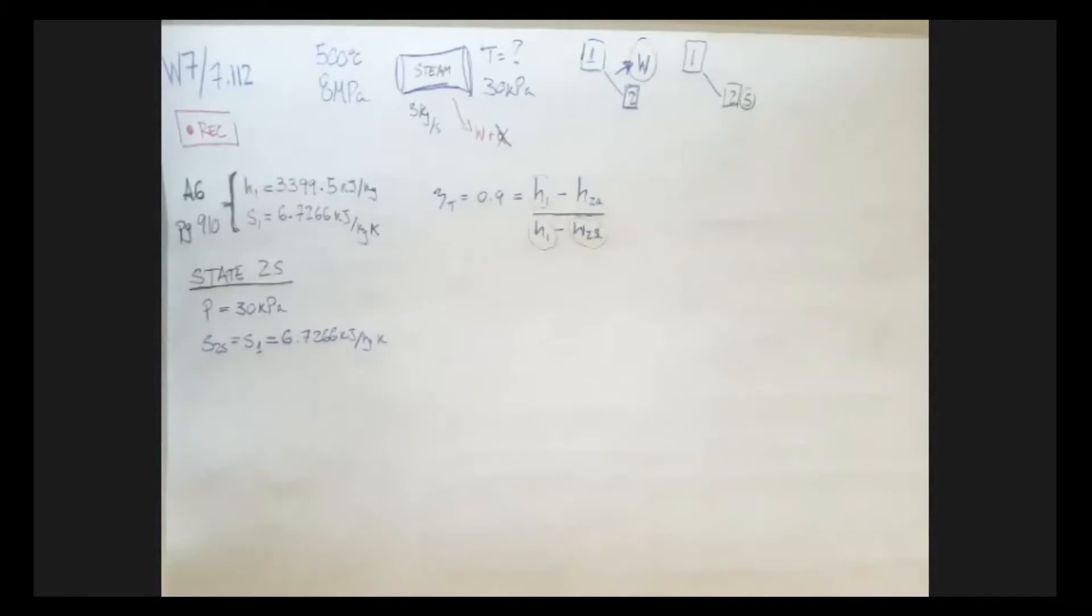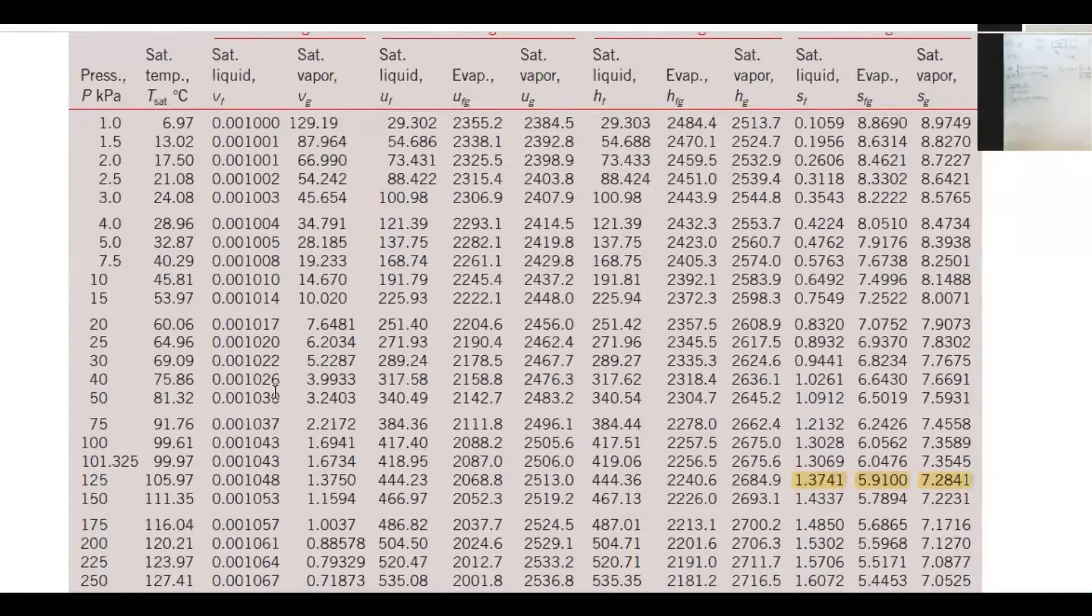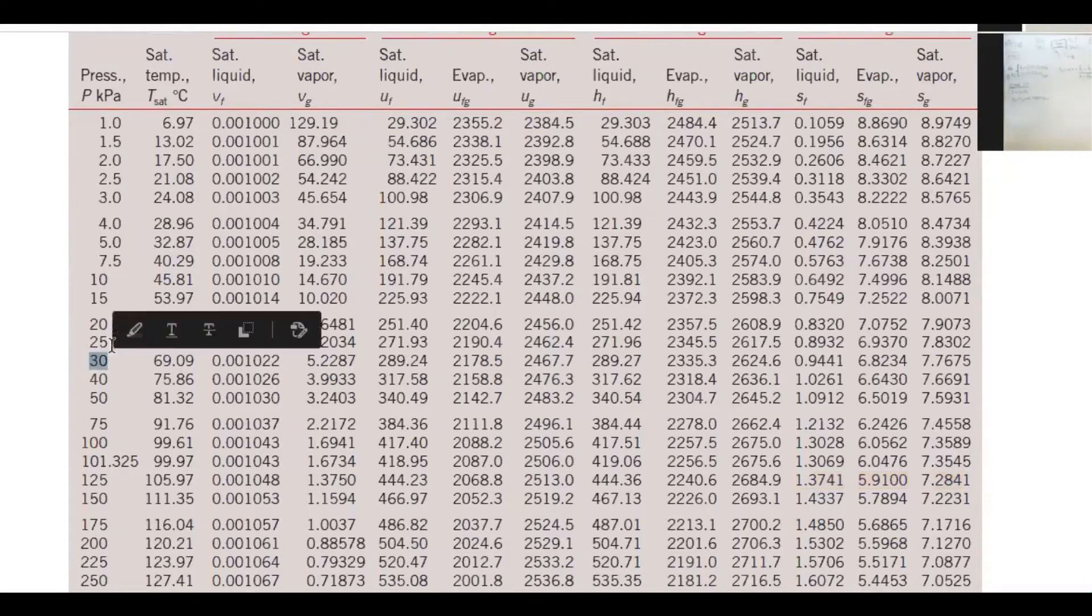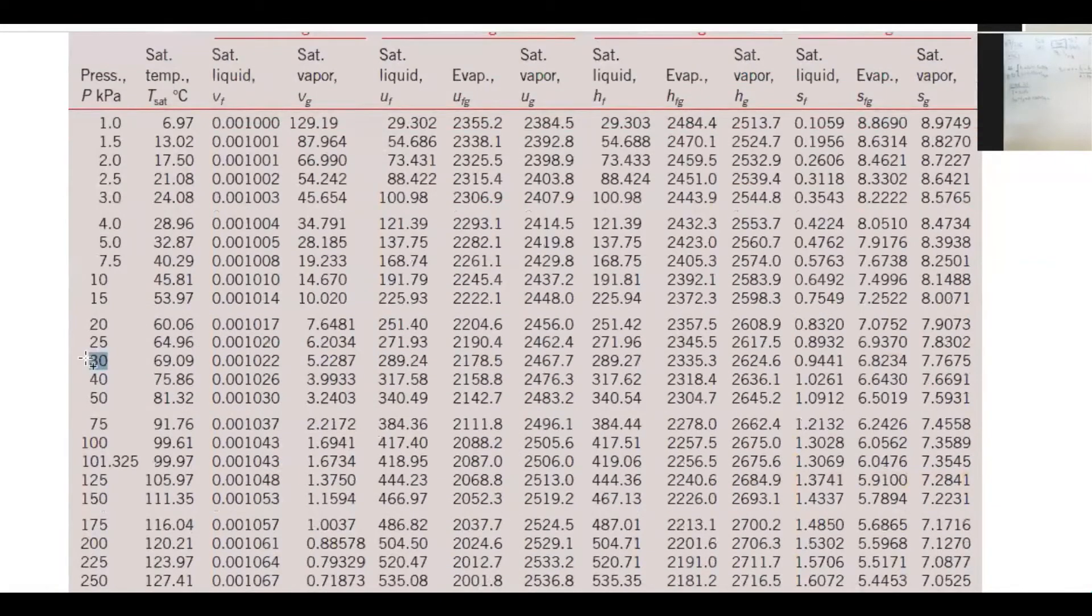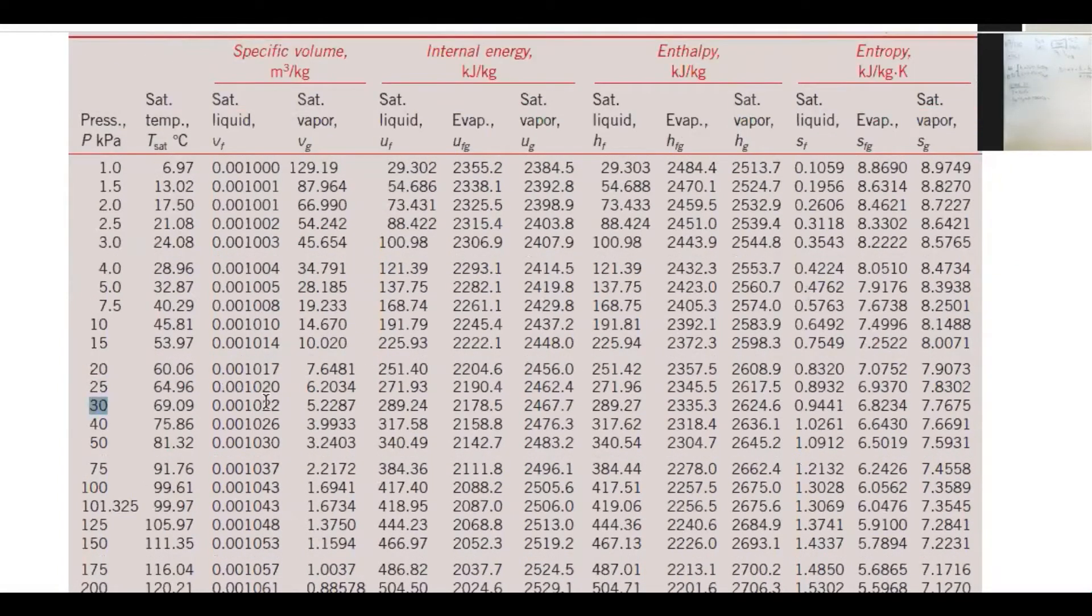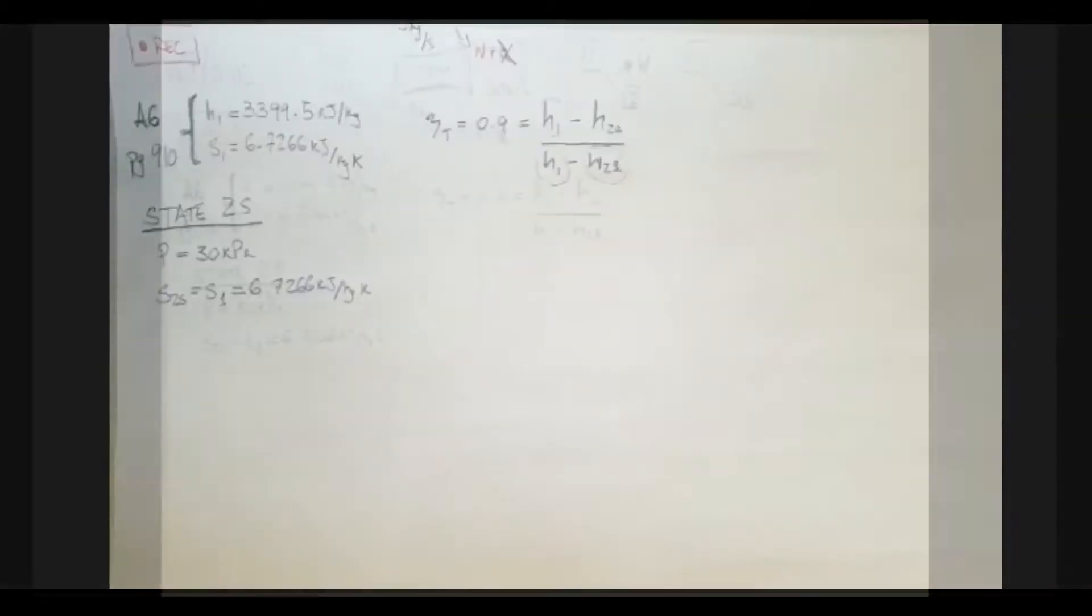So we can go back to our property table, and we can look at 30 kilopascals, just making sure in the saturated water pressure tables. 30, I'm going to be looking at the last column, which we have the relationship between the entropies, and check it out, highlight this, and our entropy is 6.7, so it falls between these two extremes. So it's not going to be superheated, it's not going to be compressed, it's not saturated liquid, it's not saturated vapor, it's between, it's a mixture of the two.